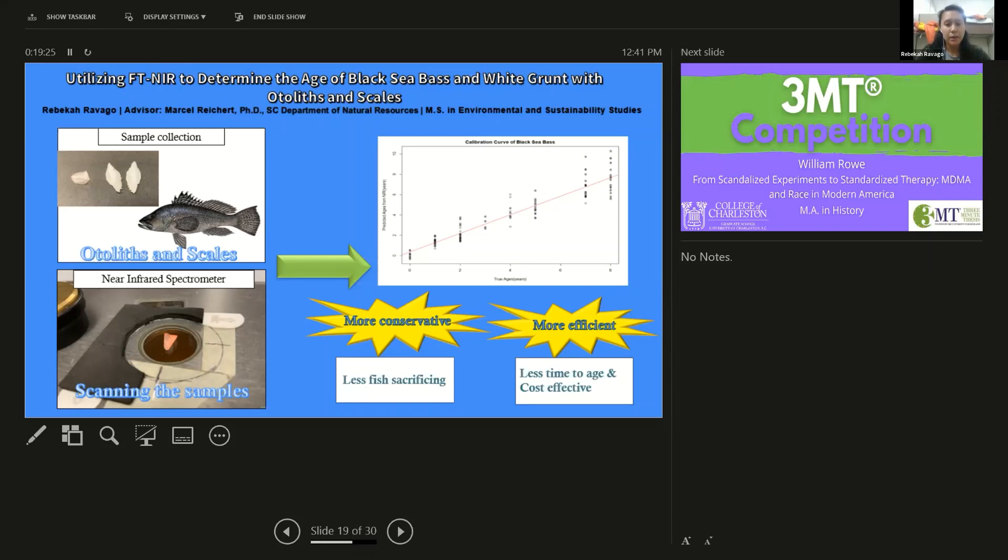I've seen firsthand that otoliths have to be dissected out of the fish, essentially sacrificing the fish. Otoliths are hard structures that give fish balance and hearing and they also provide us how old the fish is.